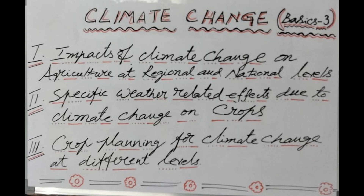Now let us go to the second subtopic: specific weather-related effects due to climate change on crops. I have divided these specific weather-related effects into three categories: number one, temperature effects; number two, water availability; and number three, elevated CO2 effects. Let me explain all three in a simple way.